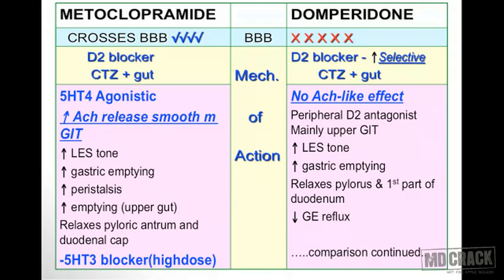This raises an important question: if domperidone doesn't cross the blood-brain barrier, how does it still act on the chemoreceptor trigger zone? The answer is that the CTZ is located outside the blood-brain barrier — the blood-brain barrier is deficient at the CTZ. So it's not necessary to cross the blood-brain barrier to act on the CTZ. Domperidone not crossing the BBB does not stop it from being a prokinetic agent. Both metoclopramide and domperidone are D2 blockers acting on CTZ and gut; domperidone is a little more selective at D2 receptors.